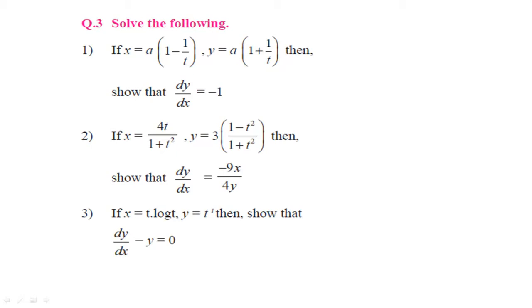We have to find dy by dx by taking dy by dt upon dx by dt. Then you will get one answer, and we have to convert that so you will get it equal to minus 1.